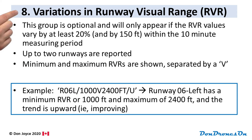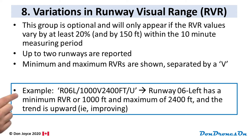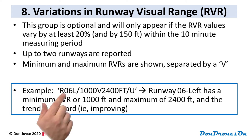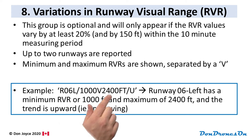The next group covers variations in runway visual range. This optional group only appears if the RVR values vary by at least 20% and by at least 150 feet within the 10-minute measuring period. Up to two runways are reported, and the minimum and maximum RVRs are shown separated by a V. Our standard example didn't have this group, so here's a separate example: R06L means runway 06 left, with visual range varying between 1,000 and 2,400 feet, and the trend is upward — so it's improving.